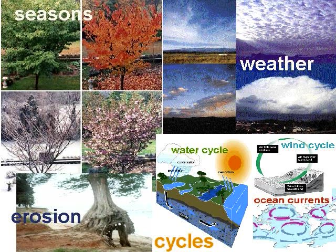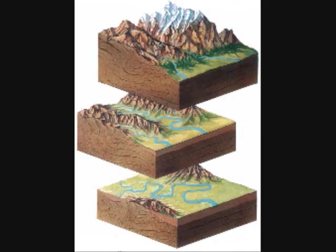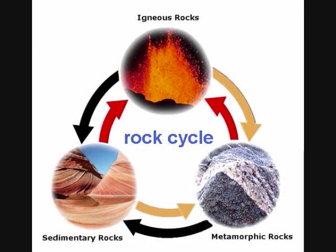Weathering and erosion are interesting phenomena that take place on the Earth. Called geologically destructive, weathering breaks down the Earth with wind, water, and ice, and then erosion moves it to another place. From our sources of internal and external heat, the rocks on the dynamic Earth also undergo change. This process is known as the rock cycle.